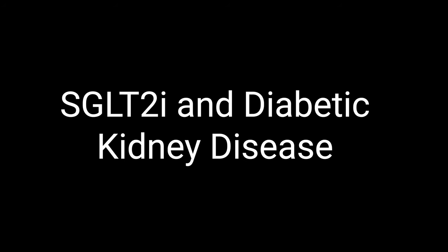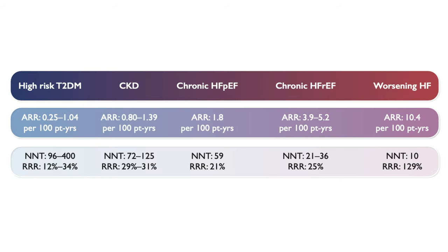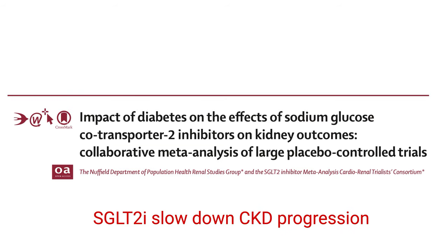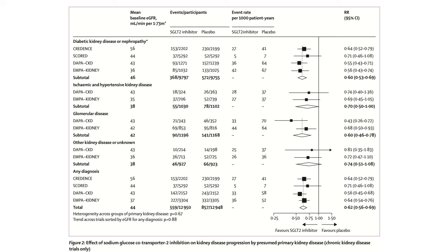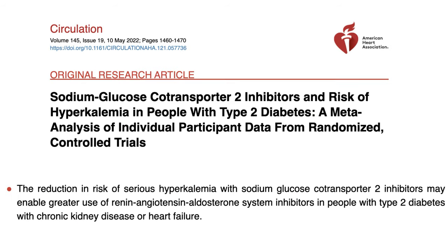The second class is SGLT2 inhibitors. The advantage of SGLT2 inhibitors is threefold: first, they reduce the risk of death, myocardial infarction, and stroke; second, they reduce the risk of heart failure mortality and hospitalization across the spectrum of ejection fraction. Although lower eGFR attenuates the hemoglobin A1c-lowering effect, meta-analysis of all SGLT2 inhibitor trials showed that the benefits on heart failure and hospitalization are unmodified by low eGFR. Third, they slow down the progression of chronic kidney disease. Three large trials — on dapagliflozin, empagliflozin, and canagliflozin — in chronic kidney disease with and without diabetes showed a consistent reduction in the risk of progression to end-stage renal disease. SGLT2 inhibitors should be initiated in patients with CKD down to an eGFR of 20 ml/min, and can be continued until the need for kidney replacement therapy. Also, adding an SGLT2 inhibitor can mitigate the risk of hyperkalemia induced by RAS blockers or MRAs.